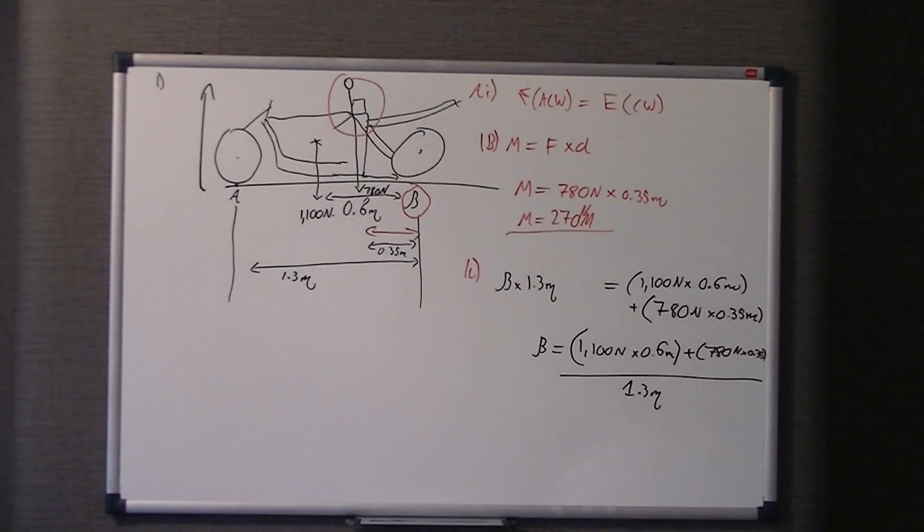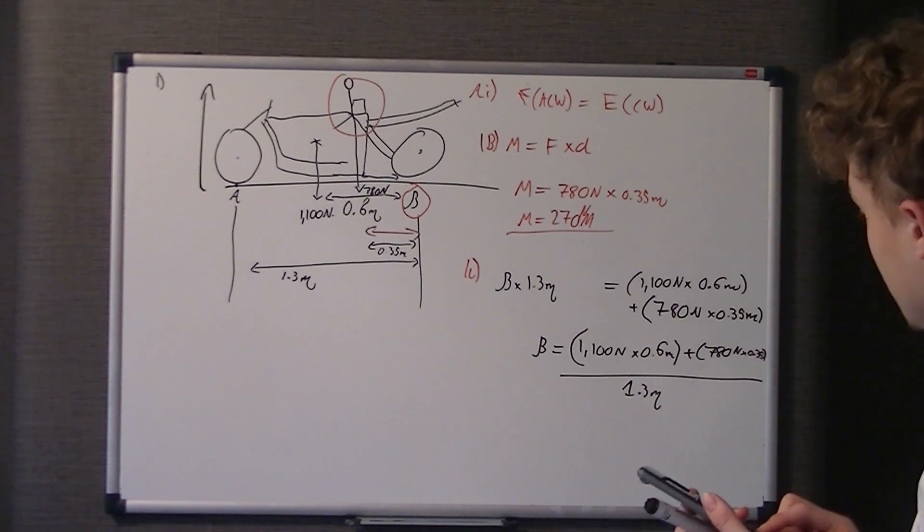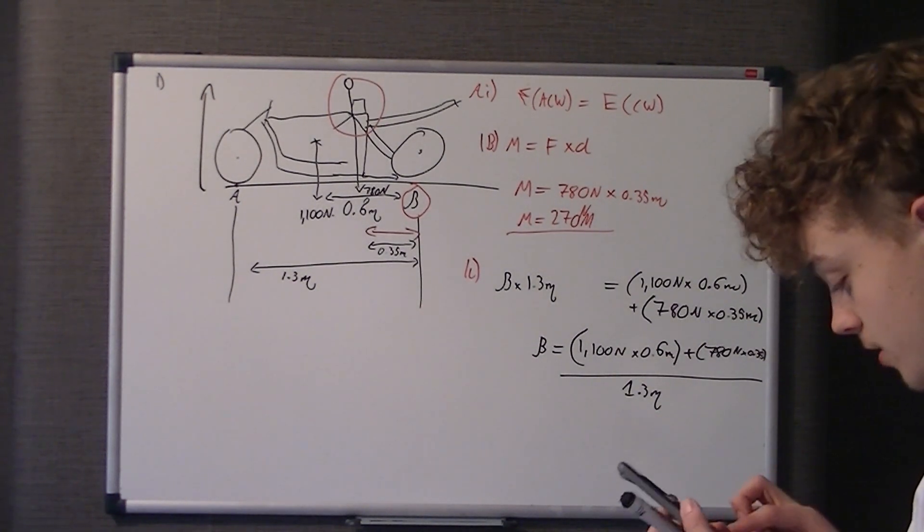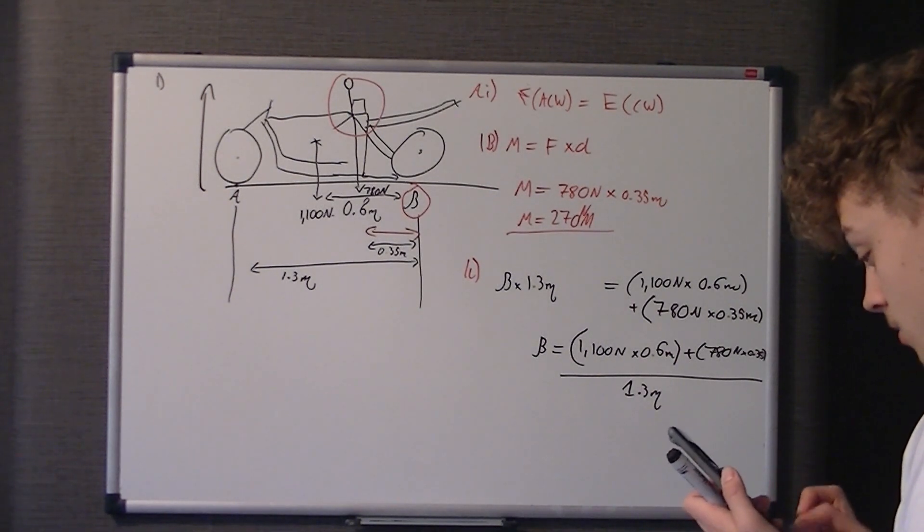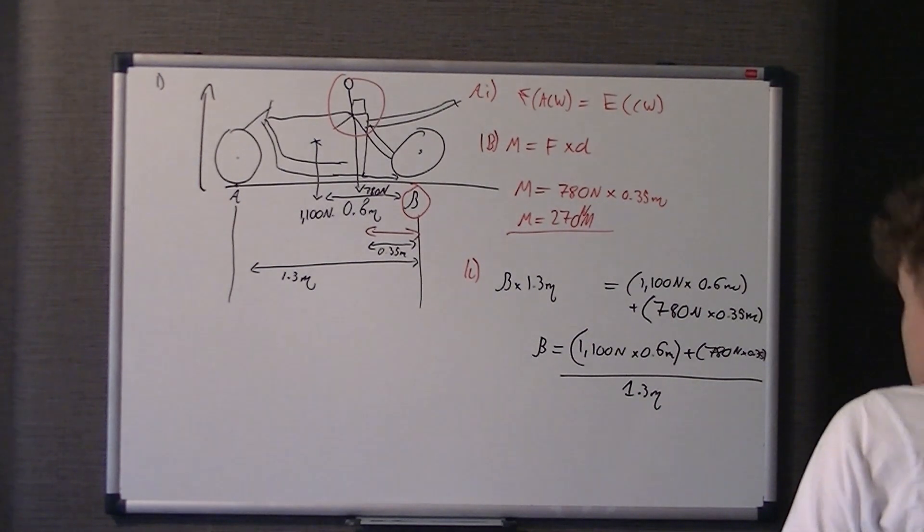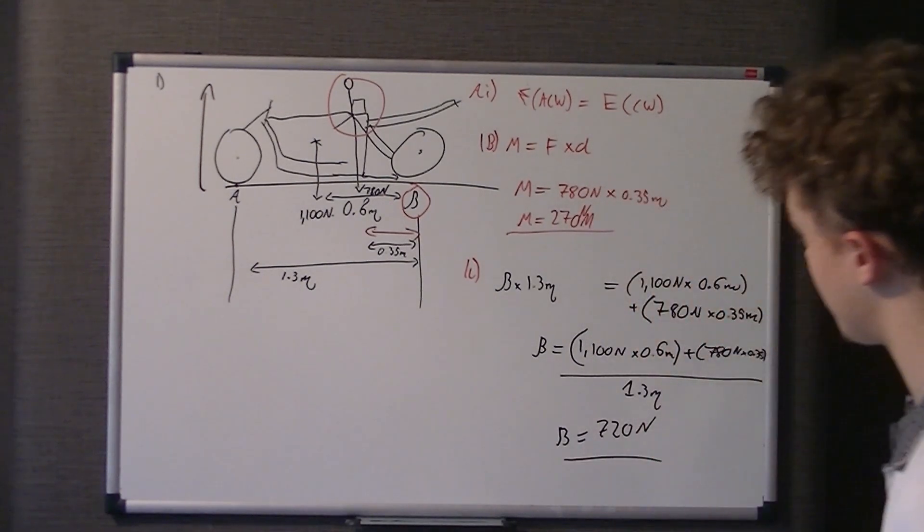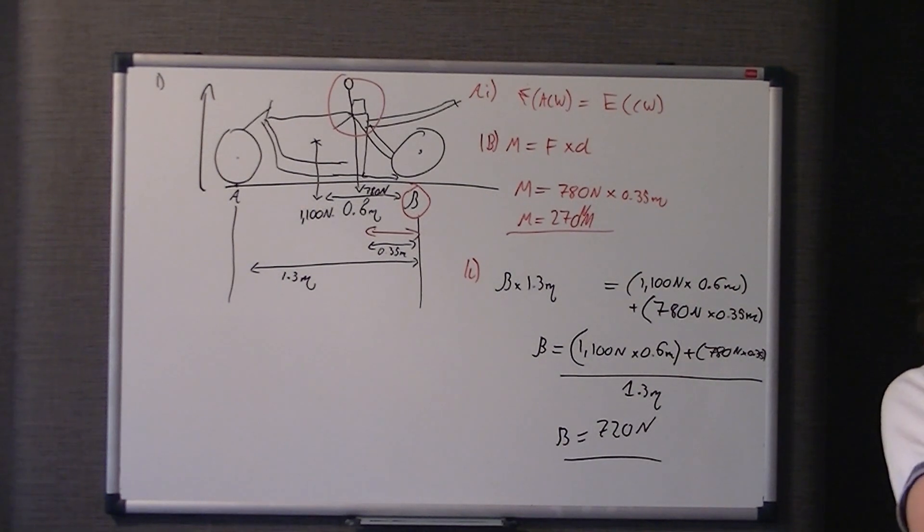Sorry, let me get a calculator and make sure I've done it right. Normally this doesn't happen, but they're not brilliant with moment ones. Just give us a second. 1100 times 0.6 plus 270 over 1.3. 715.38. Yeah, that's correct. And that gets you 720 newtons. Hopefully that's, you've understood how we've got that.